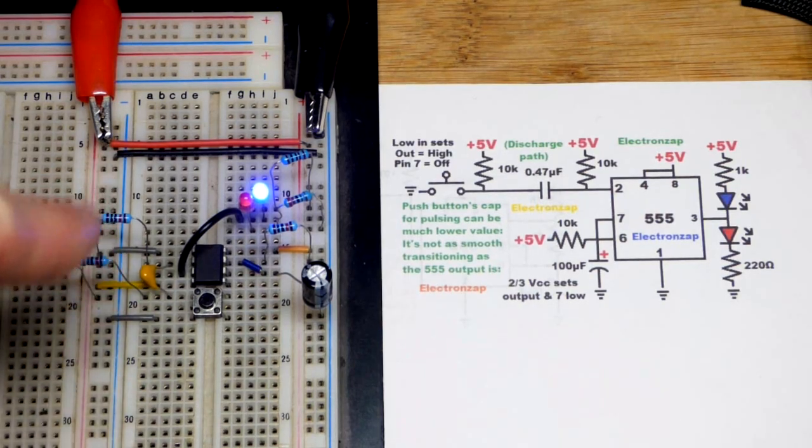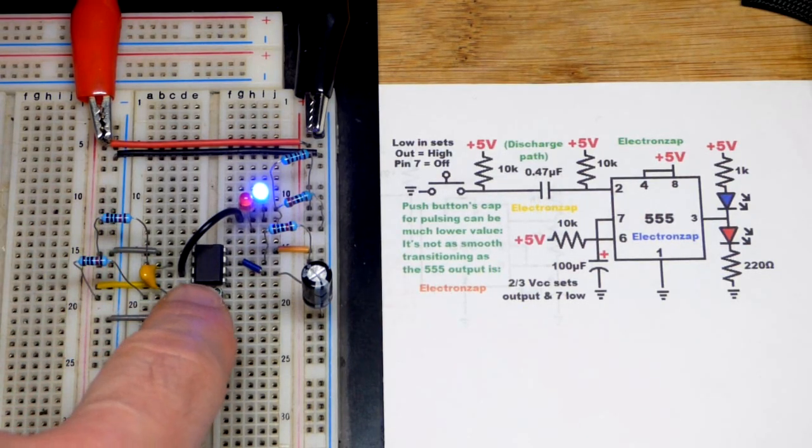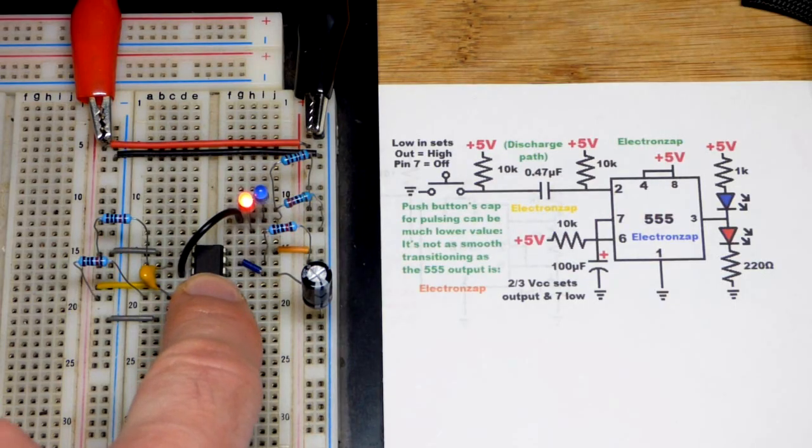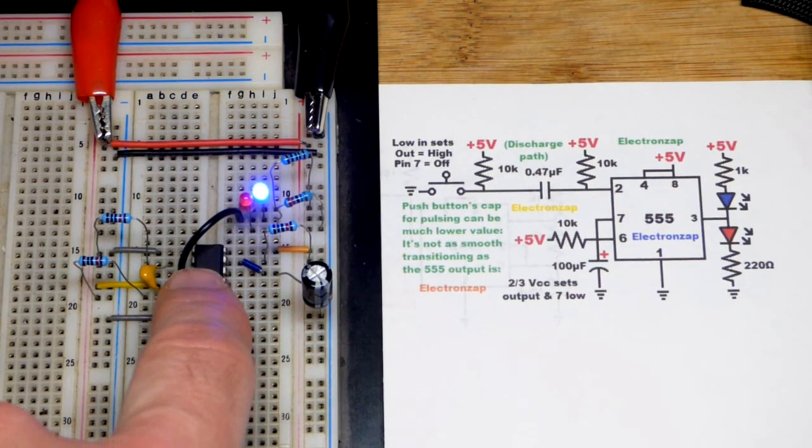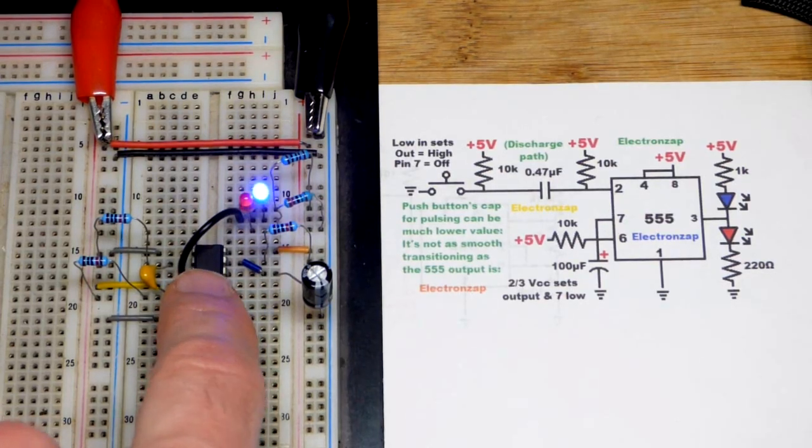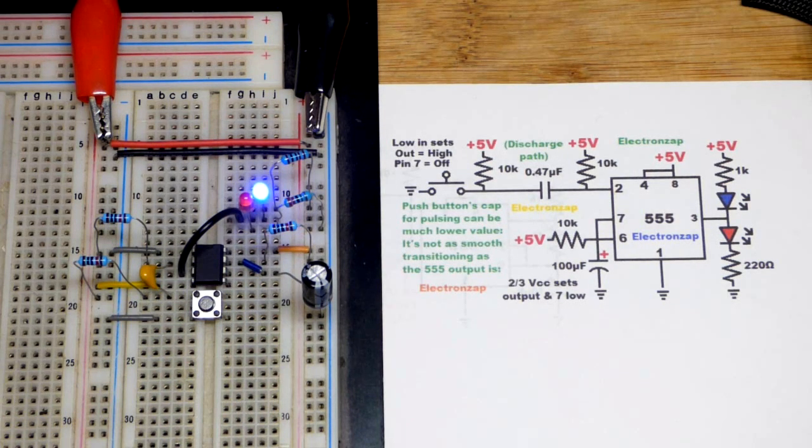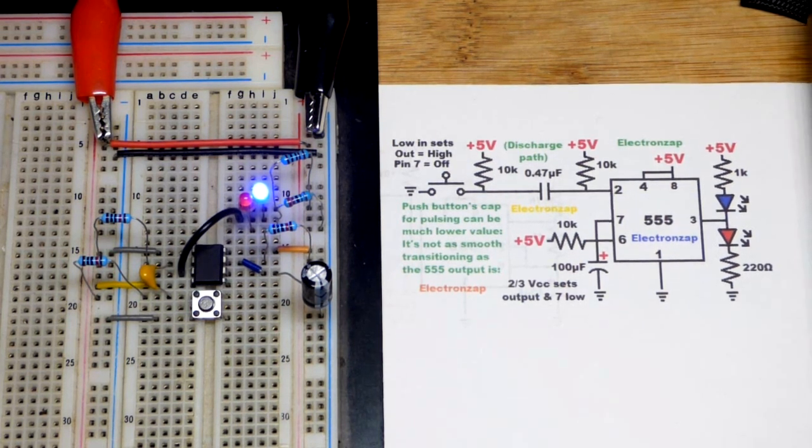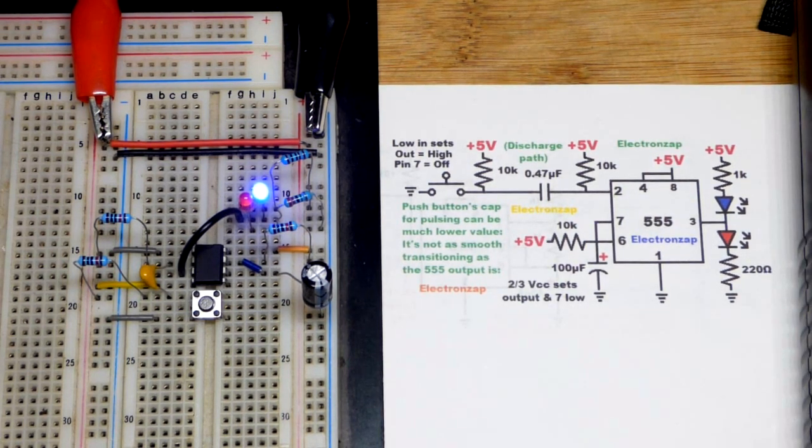You want to pick the capacitor and resistors here that are pull-up resistors that will allow the capacitor to charge while the button is pressed and then quickly discharge when you release it so that you can press it again relatively quickly.